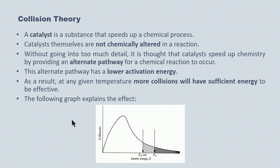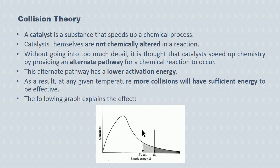The following graph explains the effect of a catalyst. The y-axis is collisions and the x-axis is kinetic energy. There are two vertical arrows: the arrow on the left is the activation energy for the reaction with no catalyst present, and it's much higher than the activation energy where a catalyst is present, represented by the second arrow. With no catalyst present, you have a much smaller subset of collisions that have enough energy to be effective. But as you lower the activation energy, you have a great many more collisions that have enough energy to be effective.